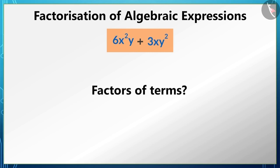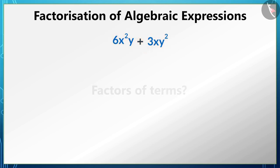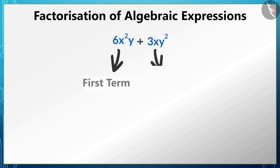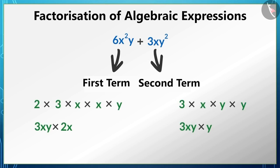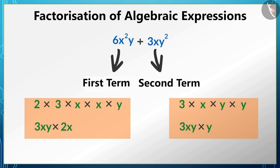Can you find the factors of these terms? This algebraic expression has two terms. We can express both terms in the form of its factors. Now can you find the common factors? We can see that 3XY is common in both the terms, so the common factor of the terms 6X²Y and 3XY² is 3XY.